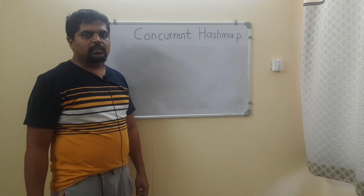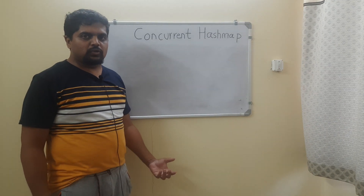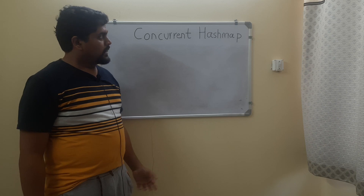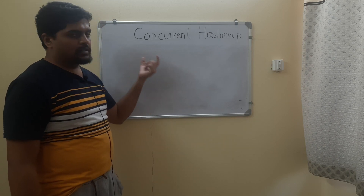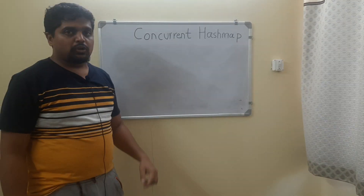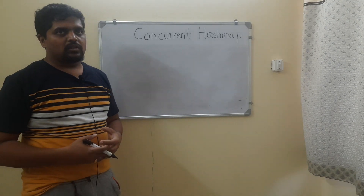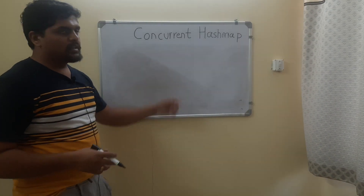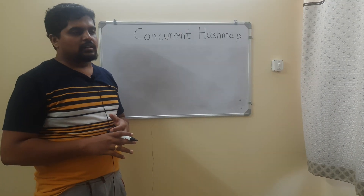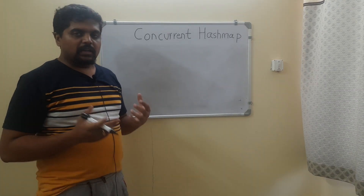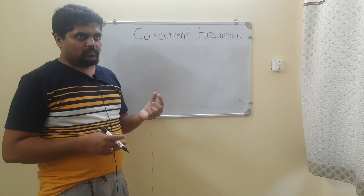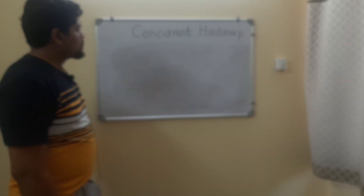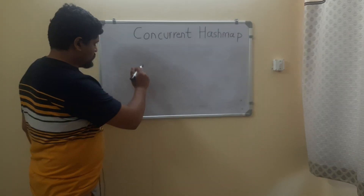Hi friends, welcome to hashtag me. In continuation to our whiteboard recording videos, in this video we will see about ConcurrentHashMap and its internal working in Java. When it comes to concurrency, you need to first know what concurrency means — when multiple threads perform multiple tasks simultaneously, concurrency occurs. In situations where a HashMap needs to work in a multi-threaded environment, ConcurrentHashMap comes into picture.